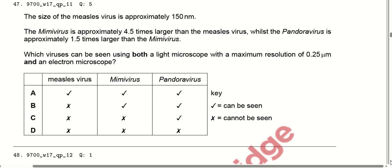The size of the measles virus is approximately 150 nanometres. The mimivirus is approximately 4 to 5 times larger than the measles virus. The pandoravirus is approximately 1.5 times larger than the mimivirus. Which viruses can be seen using both a light microscope with a maximum resolution of 0.25 micrometres and an electron microscope? The measles virus is too small and cannot be seen, but the mimivirus and pandoravirus can. Option B is correct.